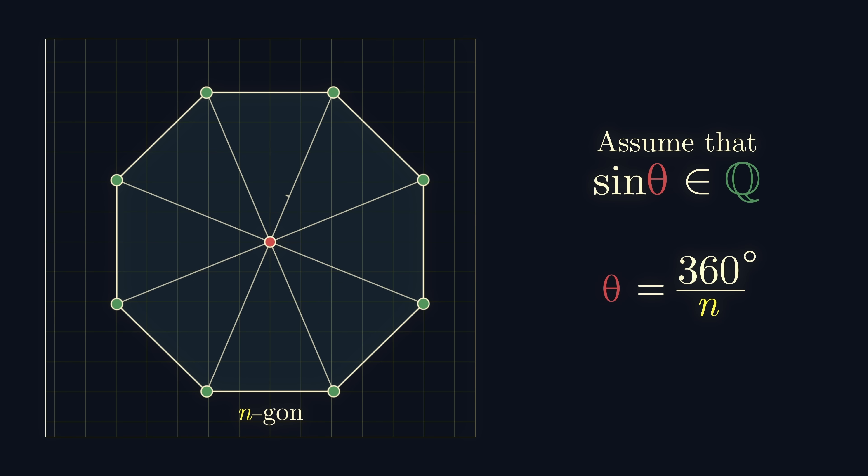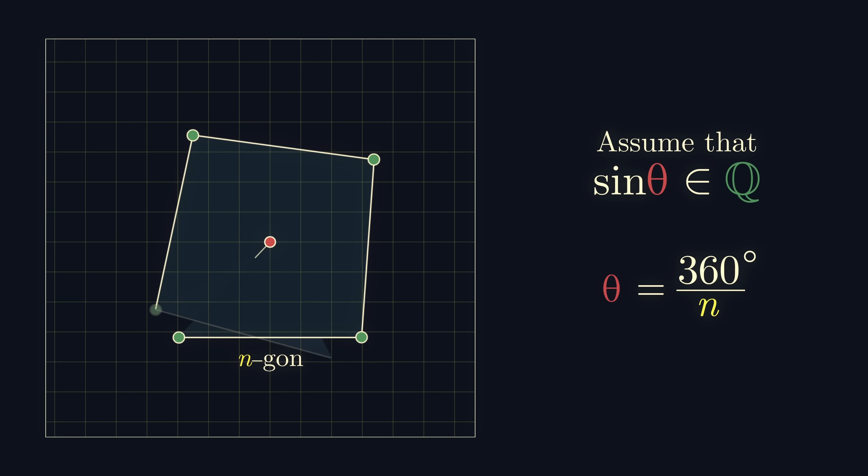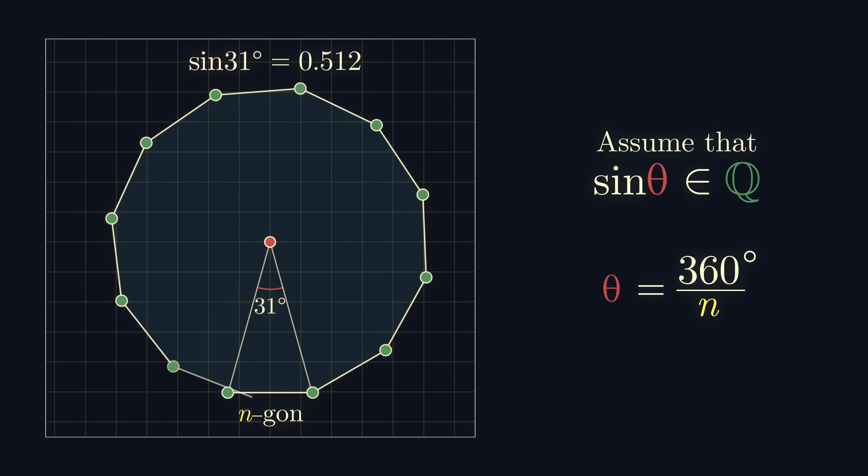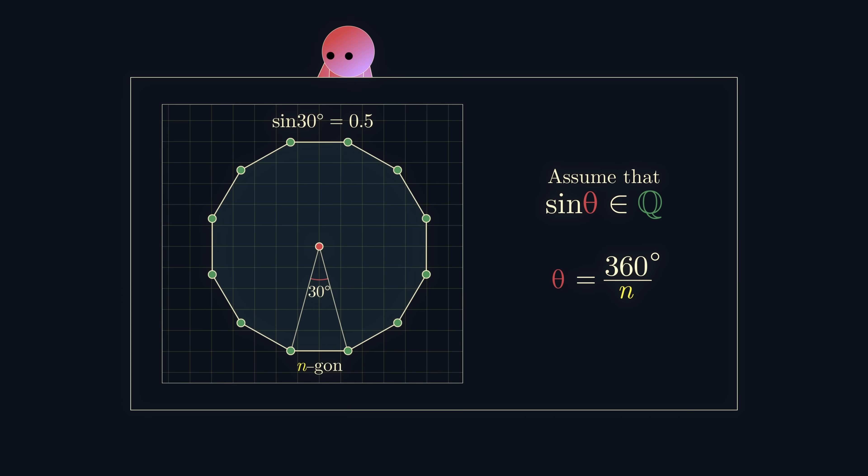Well, as we might hope when n equals 4, in other words we have a square, we get the sin of 90, which is 1, and indeed we can draw a square. But, as you might also know, sin of 30 is a half. That sounds promising, maybe we can draw a regular dodecagon, that is, where n equals 12.